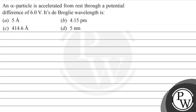Hello children, let's read this question. An alpha particle is accelerated from rest through a potential difference of 6.0 volts. Its De Broglie wavelength is — and these are the following options given to us.